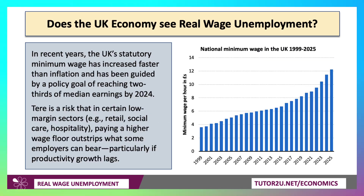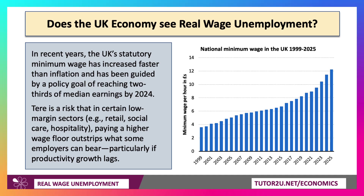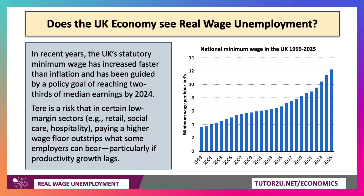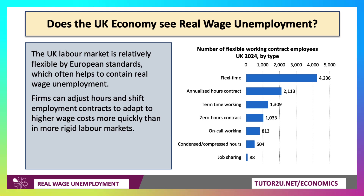What does the UK economy experience with real wage unemployment? Perhaps a little bit. On the one hand, there have been significant increases in the statutory or legal minimum wage in recent years. It's increased faster than inflation, guided by the Labour Party's goal of reaching two-thirds of median earnings by 2024. So there's a risk that in certain low-margin industries — think retail, social care, hospitality, tourism — paying a higher minimum wage might exceed what some employers can bear, particularly if productivity lags. Firms may not be able to employ as many people, or they may employ the same number but cut back on hours. On the other hand, the labour market is relatively flexible by European standards, which helps to contain real wage unemployment.